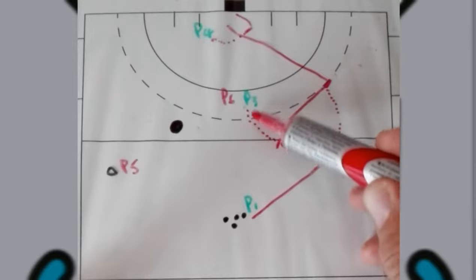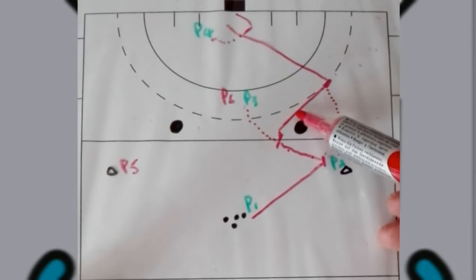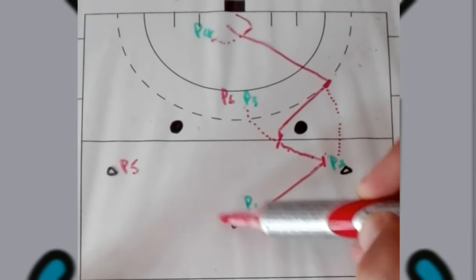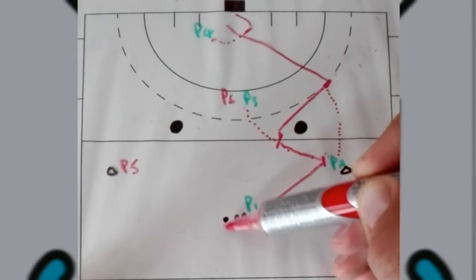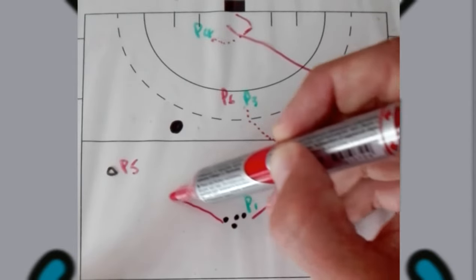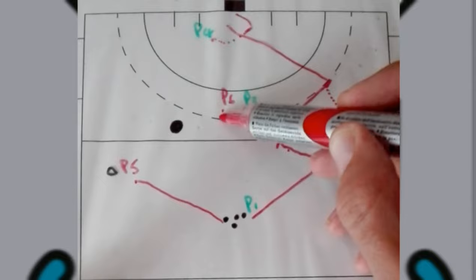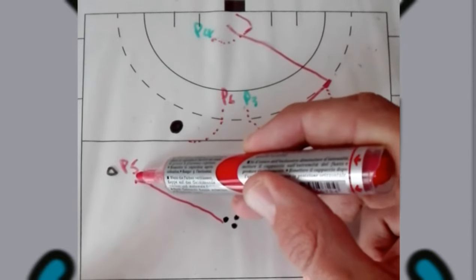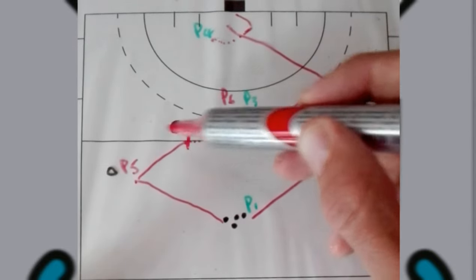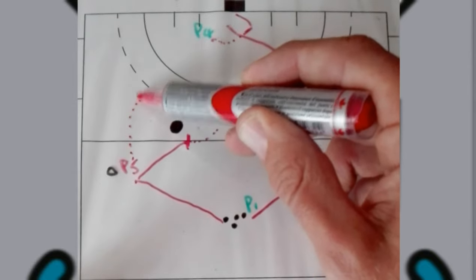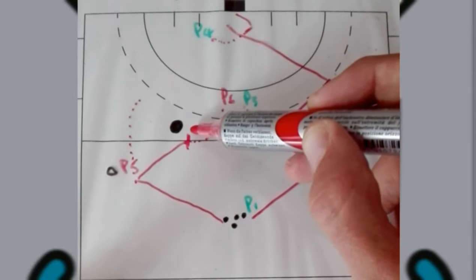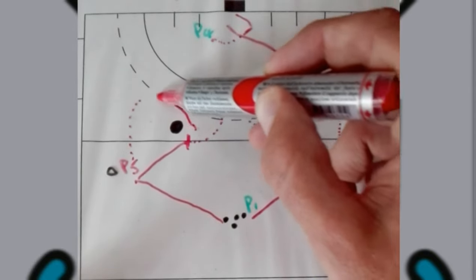As soon as this player three has passed the ball to player two, this side can start. So then the next player will pass to player five. Player six will then move towards. Player five will pass, receive. Player five will then keep moving. Player six will then pass the ball to player five.